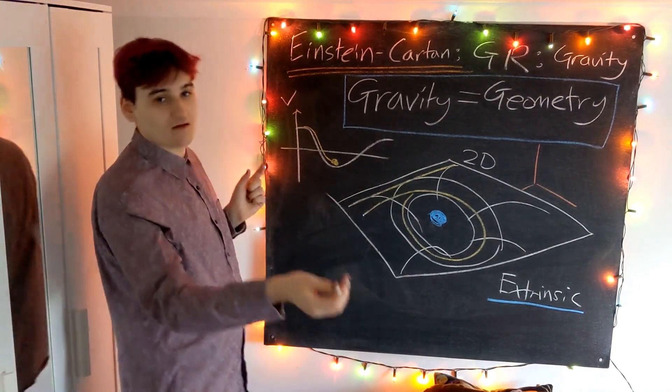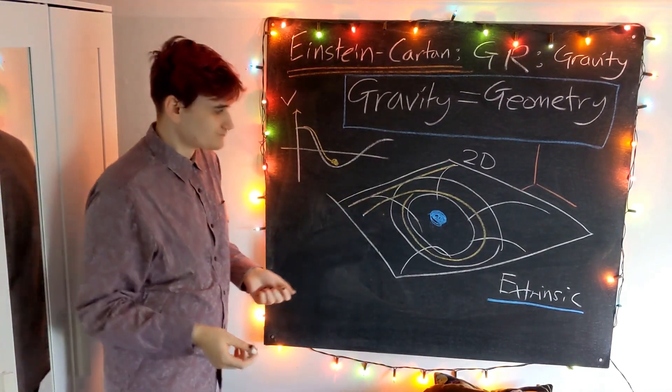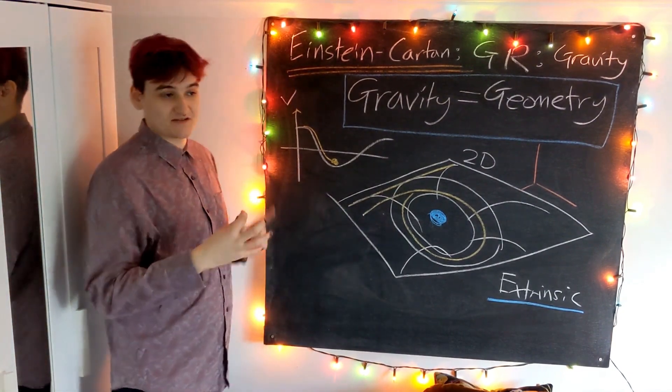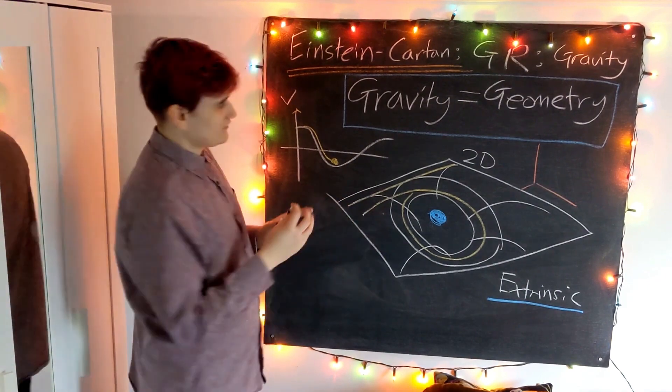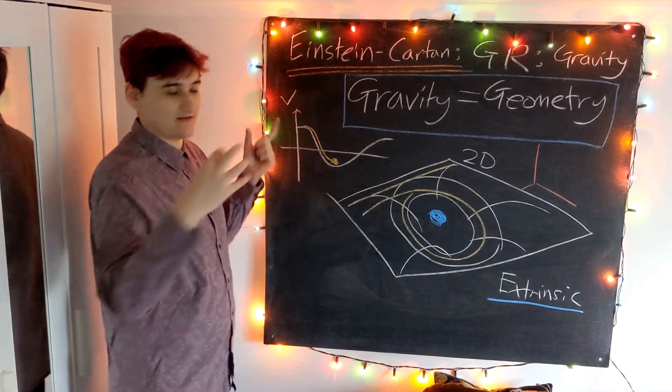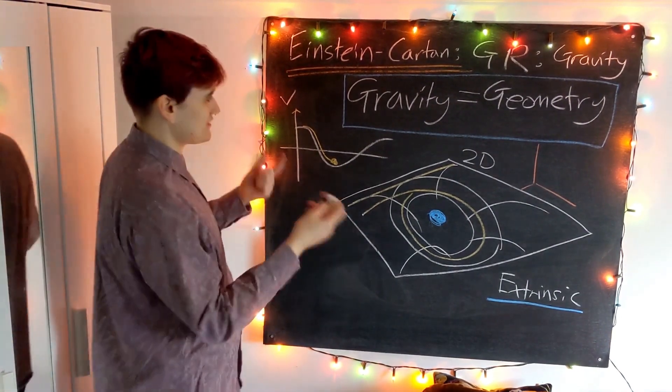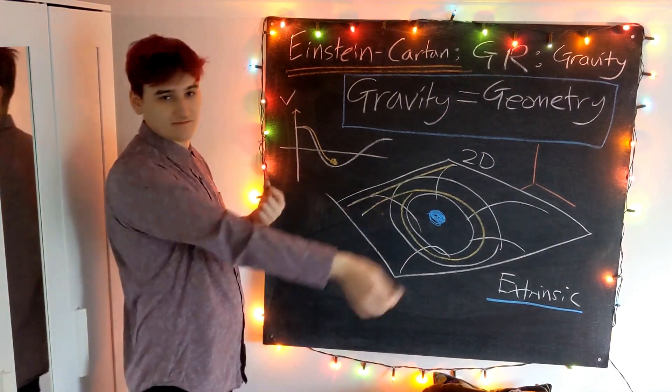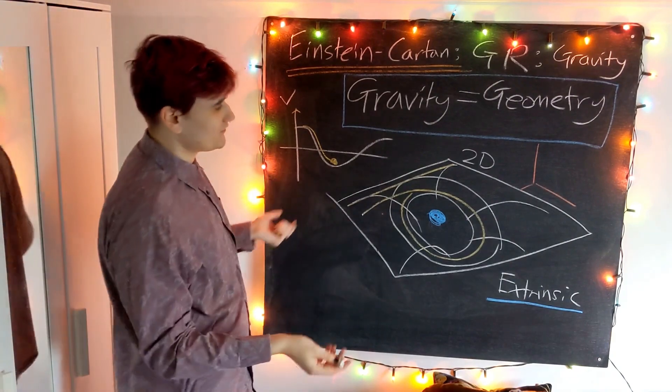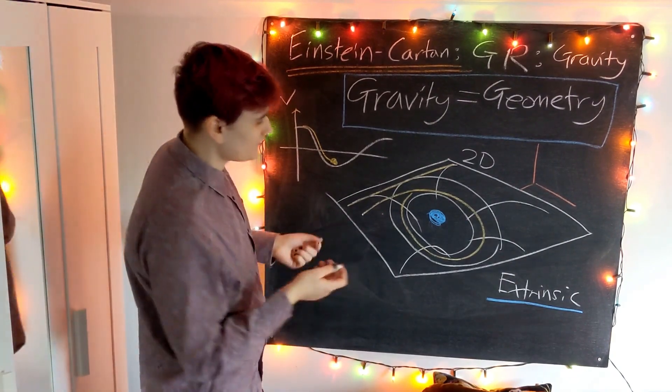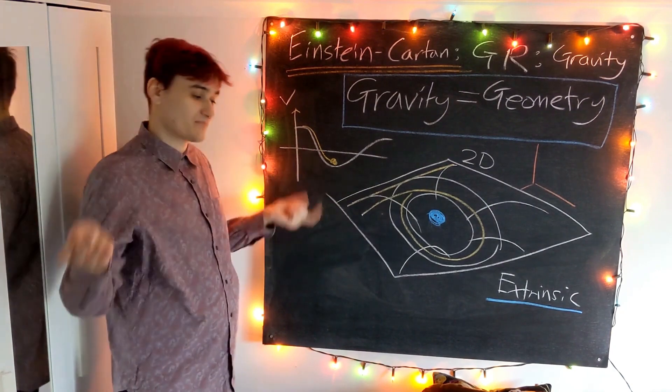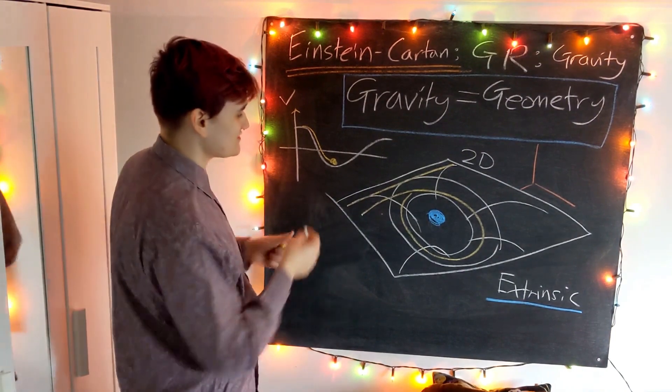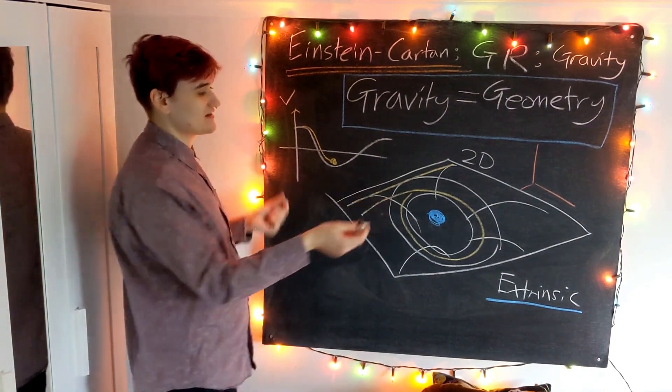When we do general relativity, we like to talk about spacetimes as being on their own—they're not embedded in any higher dimensional space. We think we live in three spatial dimensions and one time dimension, so we have a four-dimensional spacetime. That's our universe and that's everything. We don't have some higher five-dimensional space which this universe is contained within.